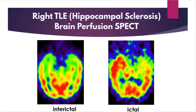This figure shows brain perfusion SPECT during interictal and ictal phases in right temporal lobe epilepsy. During the interictal phase, there is a decrease in perfusion from the right medial temporal area to the temporal pole and lateral temporal area. During the ictal phase, there is an increase in perfusion in the same areas.